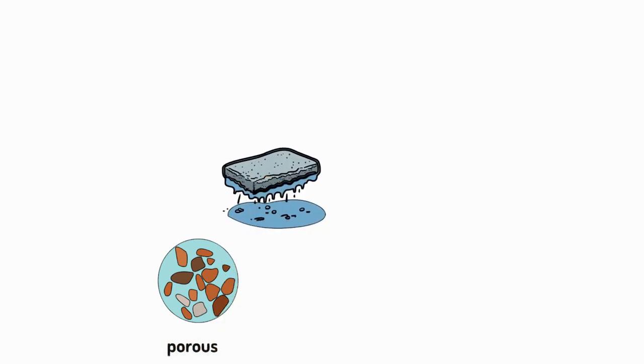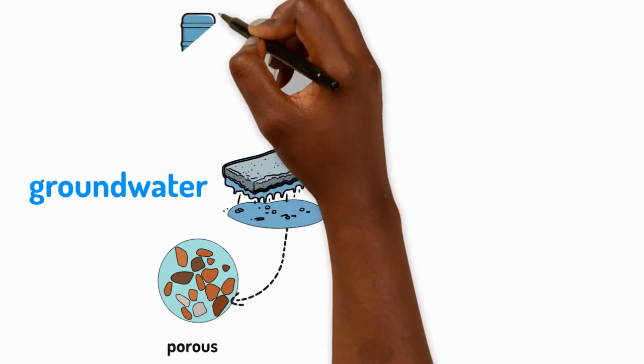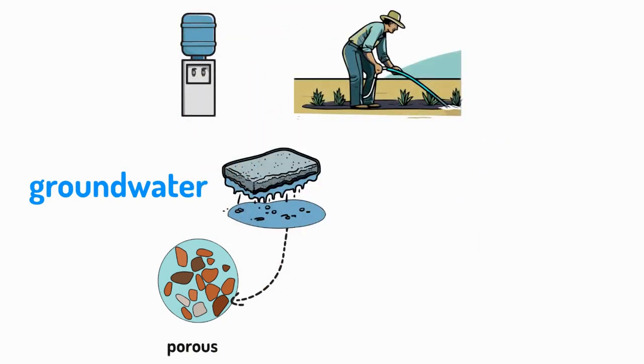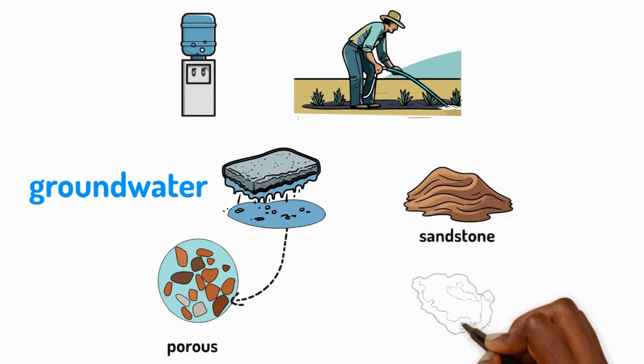But some rocks do have spaces inside them. We call them porous rocks. Water and air can get inside the spaces. The water inside them is called groundwater, and it's very important because we can use this water for drinking or watering crops. Examples are sandstone and limestone.